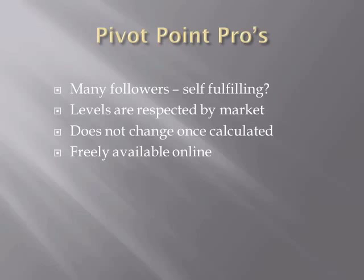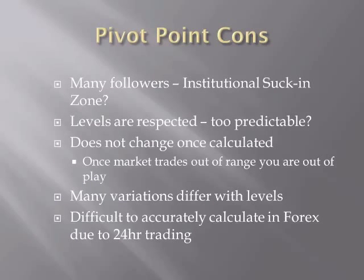Having many followers is a pro, but it's also a con. What happens in the market is that institutional traders know exactly at which level they can counter-trade. For their order to be filled, they need a whole heap of money to buy against - and if they've got a whole range of retail traders, that's you and me, all going long or short at a certain level, they get their trade filled at that level. The levels are very respected by the market, which makes it very predictable but also open to manipulation.